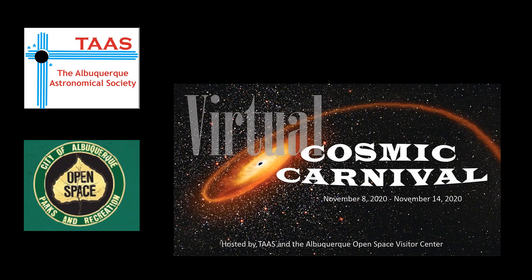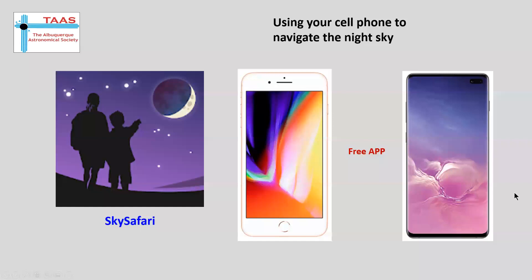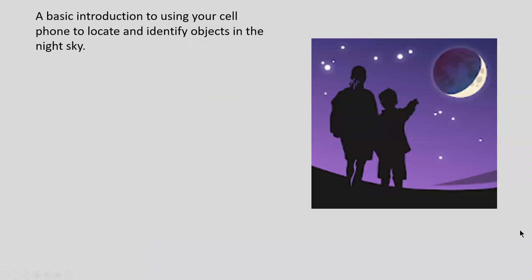So I will start. My presentation is entitled Using Your Cell Phone to Navigate the Night Sky. This is a basic introduction as to how you can use your cell phone, whether it's an Android or an Apple, to view what's in the night sky, identify what's in the night sky, and maybe find something that you would like in the night sky. We're going to use a free app. It's called Sky Safari, and it's available for both Android and Apple and basically works the same.